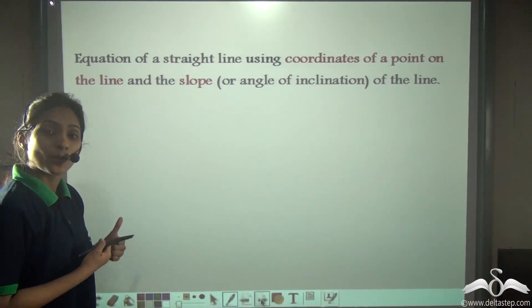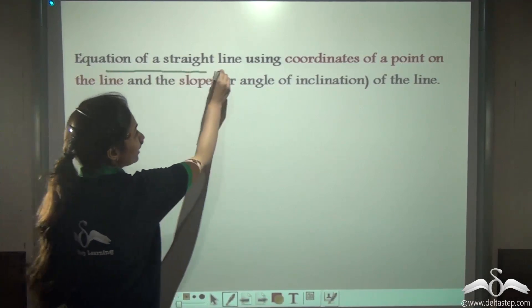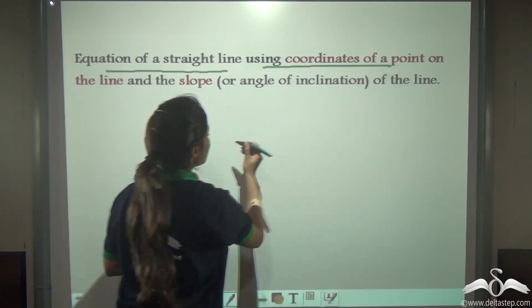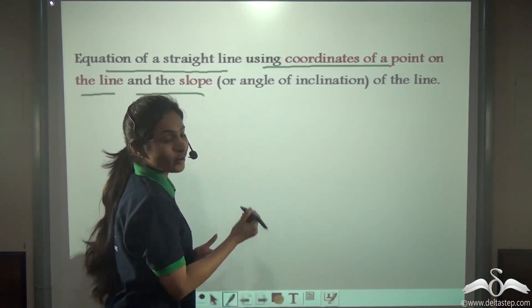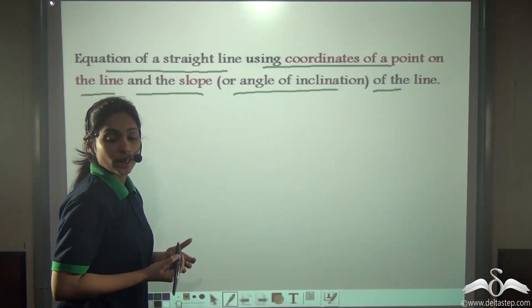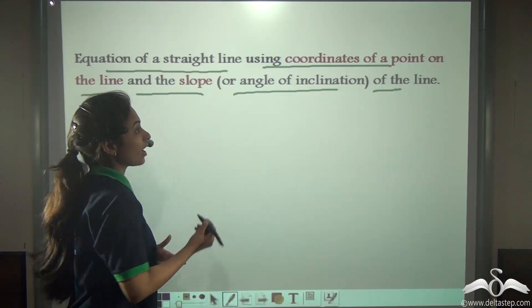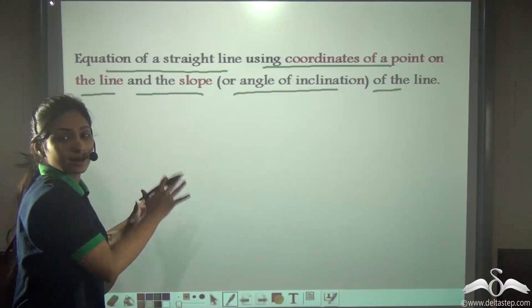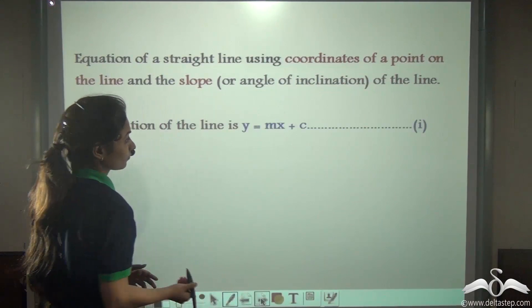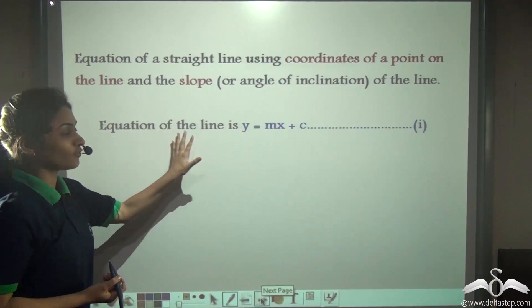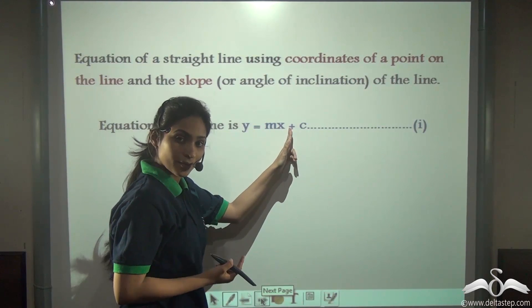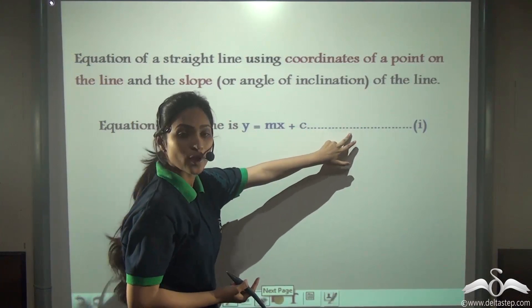Now we will find out the equation of a straight line using coordinates of a point on the line and the slope or angle of inclination of the line. You know that the equation of the line in slope intercept form is y is equal to mx plus c. Let us name this as equation 1.